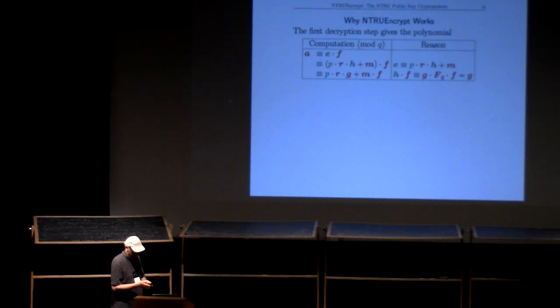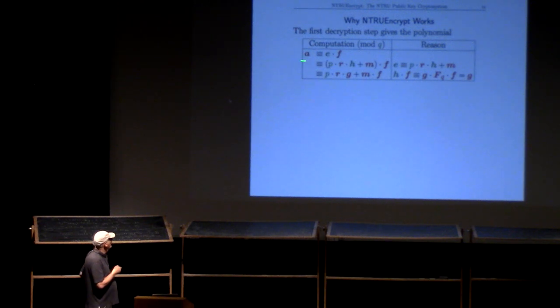Here's why it works. What is the A that Alice is computing? She does E times f mod q. That was the first step. But what was E? Remember, this is how Bob created E. It was p times r times h plus m, so I just substituted that in here. And now, let's just multiply the f through using the distributive law. So, I get M times f. But h times f is g mod q. Because remember, h was little g times the inverse of little f mod q. This is why I put that inverse in. So, the capital F sub q times the left cancel. They're 1 mod q.